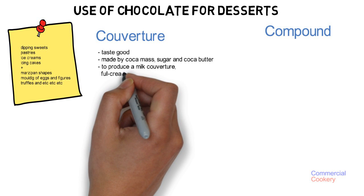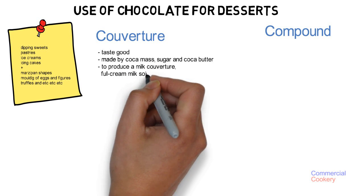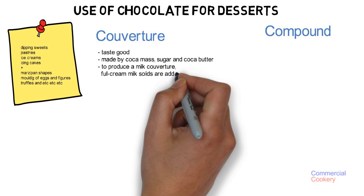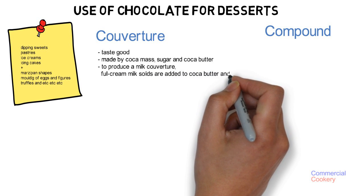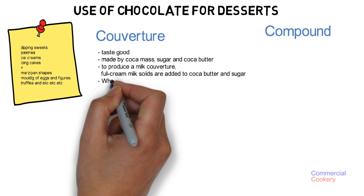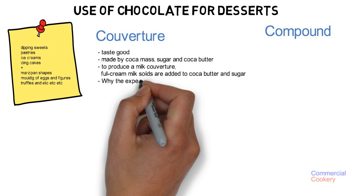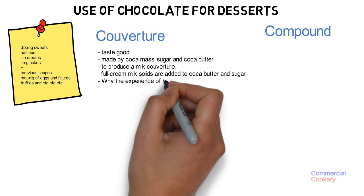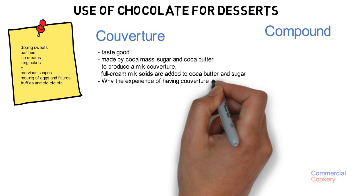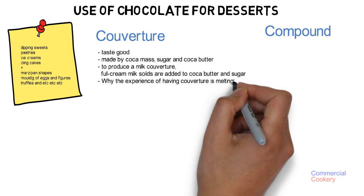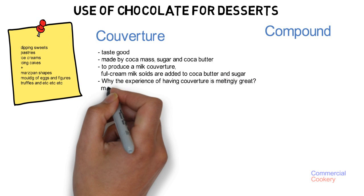To produce a milk couverture, full cream milk solids are added to cocoa butter and sugar. The cocoa butter gives the impression of cooling the mouth as it melts.